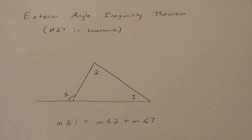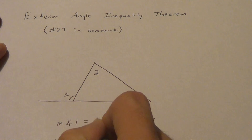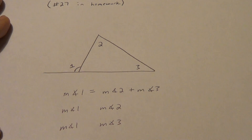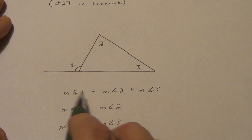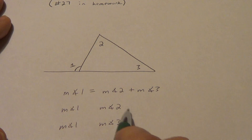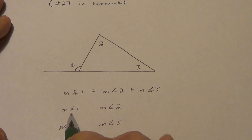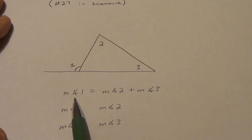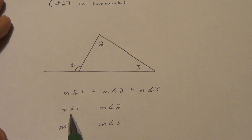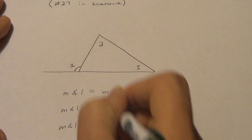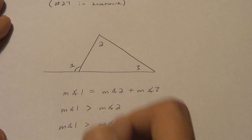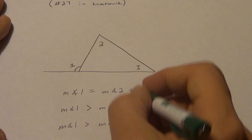It's very simple to go to the exterior angle inequality theorem. All it does is ask: what about the measure of angle one versus the measure of angle two? And what about the measure of angle one versus the measure of angle three? If I add these two together to get them to equal this, but now I only have angle two, they're not going to be equal anymore, because angle three is not here. So which one's bigger? Two things added together equal one thing, and now I only have one of them — this side's definitely smaller. So angle one is greater than angle two. Same idea: if I only have angle three, angle one's going to be bigger. That's all the exterior angle inequality theorem says.